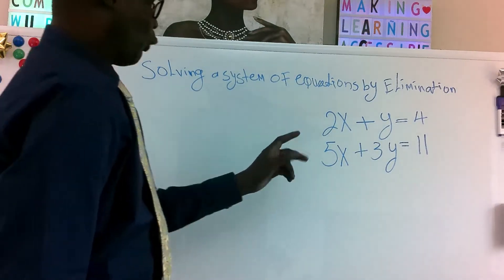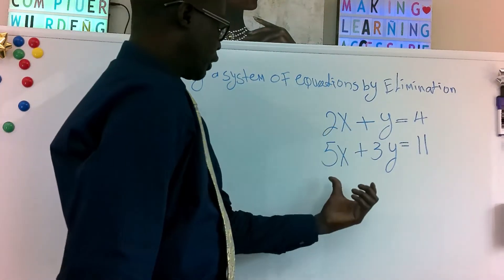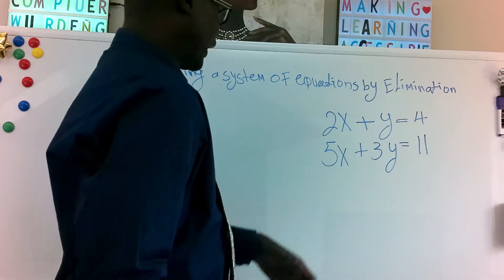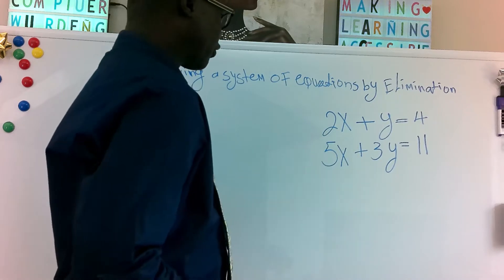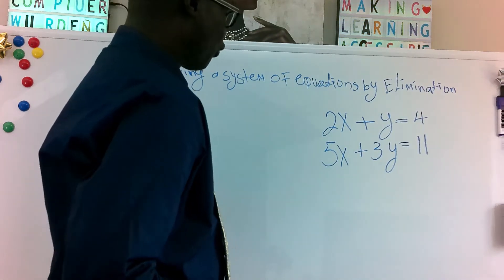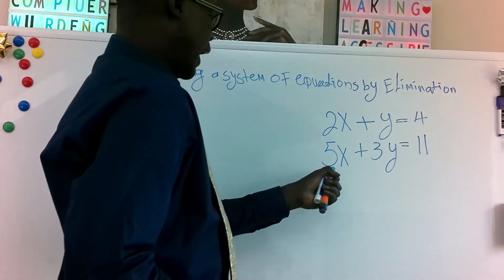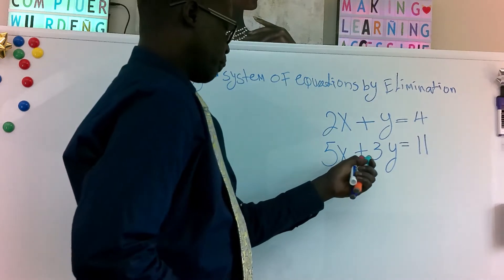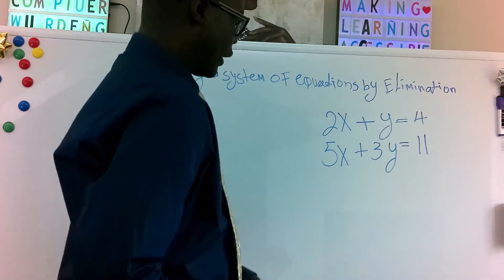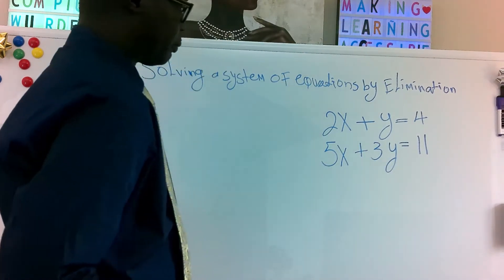What we have here today: we have 2x plus y equals 4, and 5x plus 3y equals 11.